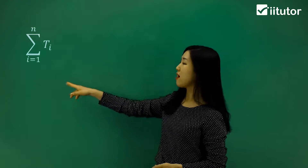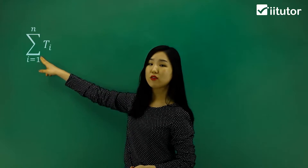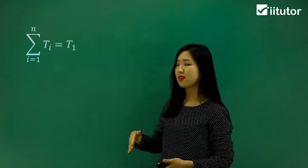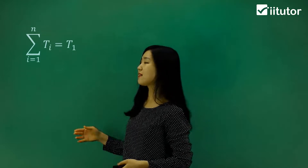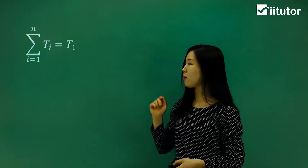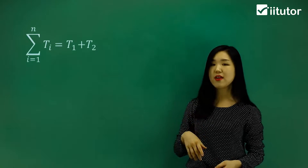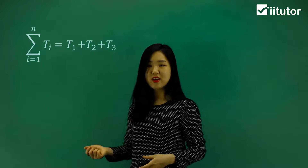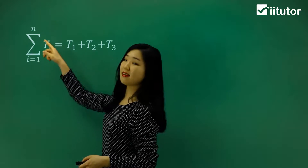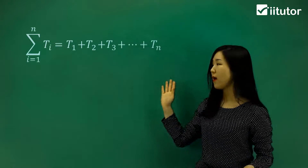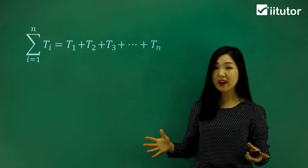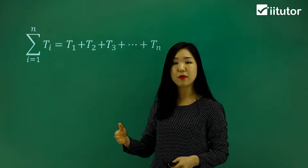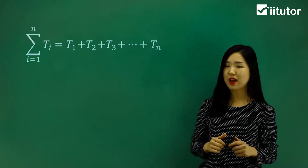So the first one we put in is i equals 1. If we replace the i with 1, it will be t1. The next whole number up is 2, so replacing i with 2 gives t2. Then t3, t4, t5, going on and on until i is n. So we go all the way to tn and add it all up, because the sigma notation implies sum.